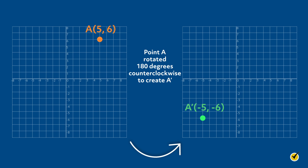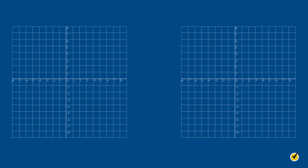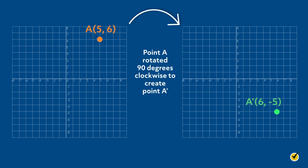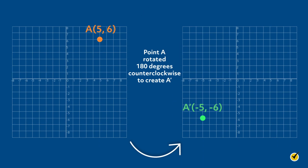Let's take a closer look at the two rotations from our experiment. In our first experiment, when we rotate point A 90 degrees clockwise about the origin to create point A', the y value of point A became the x value of point A', and the x value of point A became the y value of point A', but with the opposite sign. In our second experiment, point A is rotated 180 degrees counterclockwise about the origin to create A', where the x and y values are the same as point A, but with opposite signs.